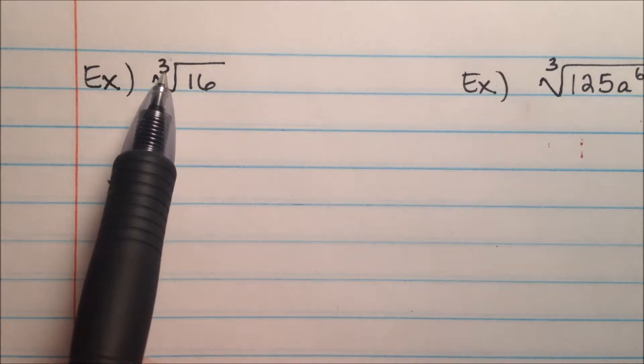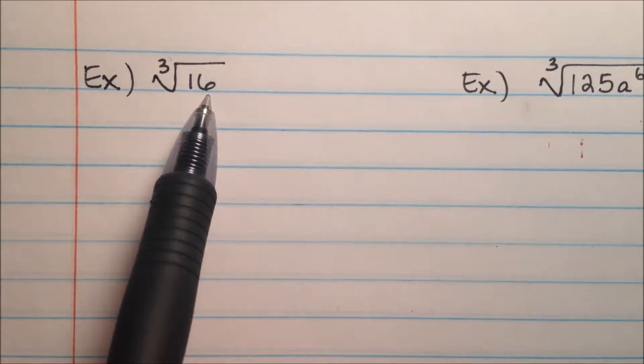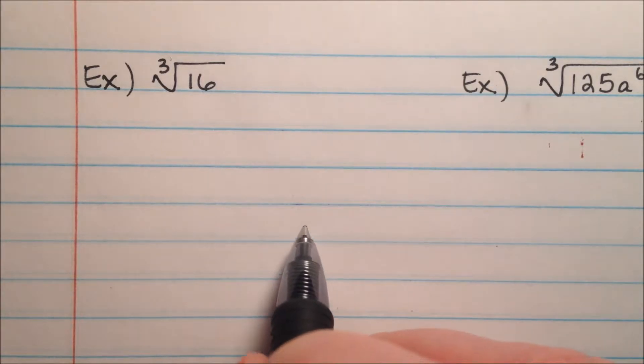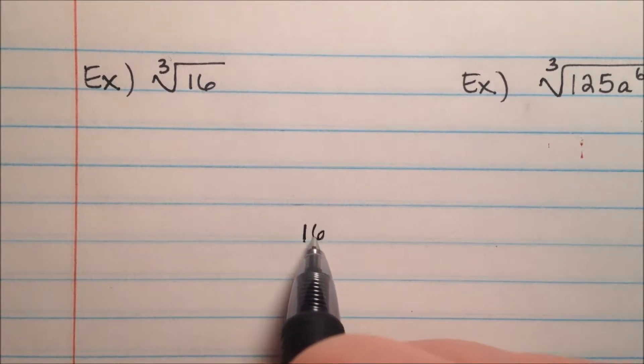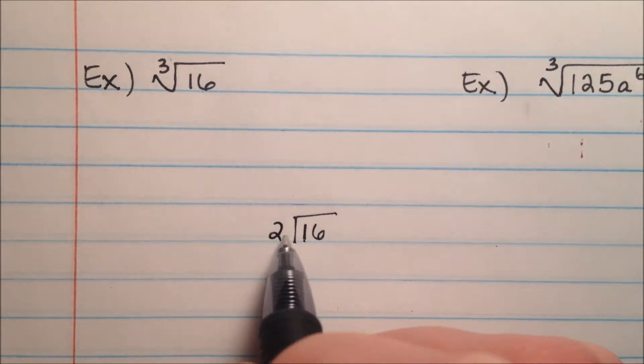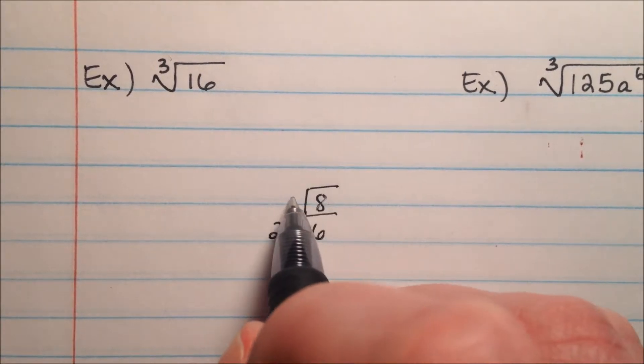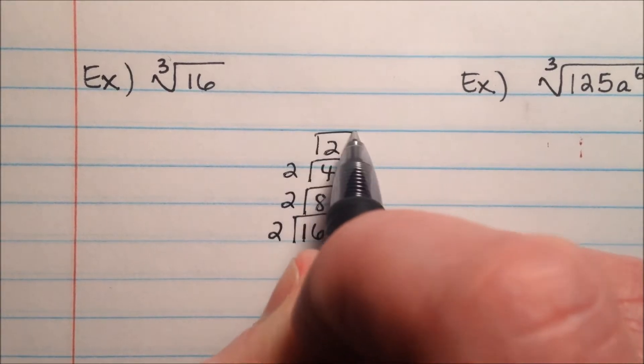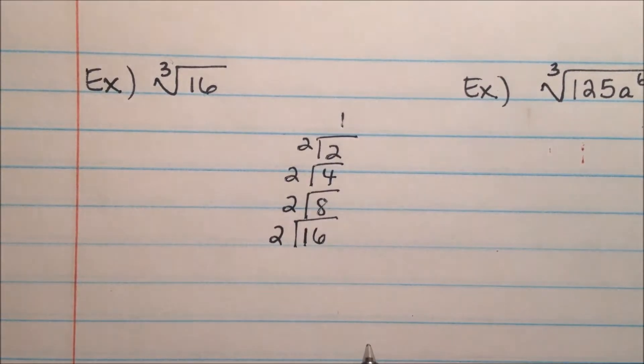So in this first example, I have the cubed root of 16. I'm going to continue pretty much like I did with a square root with one minor adjustment that needs to be made. So I'm going to start with 16 and find the prime factorization of it. I'm going to take a 2 out, and that leaves me with an 8. Another 2 makes 4, another 2 makes 2, and one final 2 makes a 1.